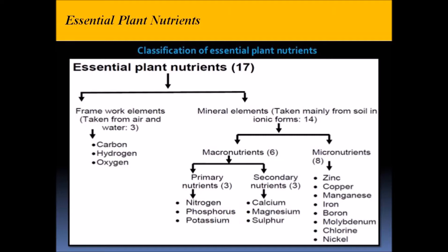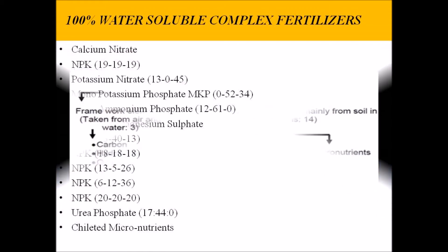These essential plant nutrients include framework elements taken from air or water, and mineral elements taken mainly from soil in ionic form. The framework elements are carbon, hydrogen, and oxygen. The mineral elements are further classified into macronutrients and micronutrients. Macronutrients are required in larger quantities; among these, primary nutrients are nitrogen, phosphorus, and potassium, while secondary elements are calcium, magnesium, and sulfur. Micronutrients are equally important but required in much lesser quantities.